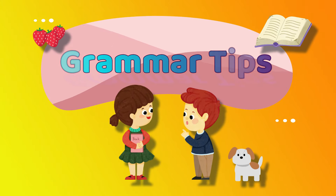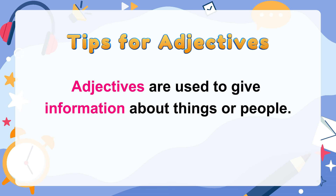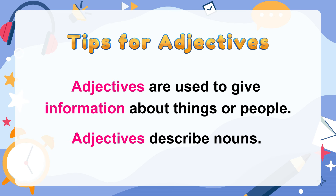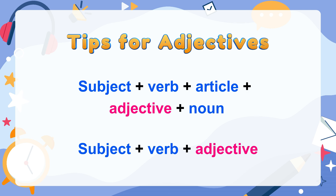Grammar Tips. We will look at some tips for adjectives. Adjectives are used to give information about things or people. Adjectives describe nouns. They usually come before nouns. The form is Subject plus Verb plus an Article plus Adjective plus Noun, or Subject plus Verb plus Adjective.